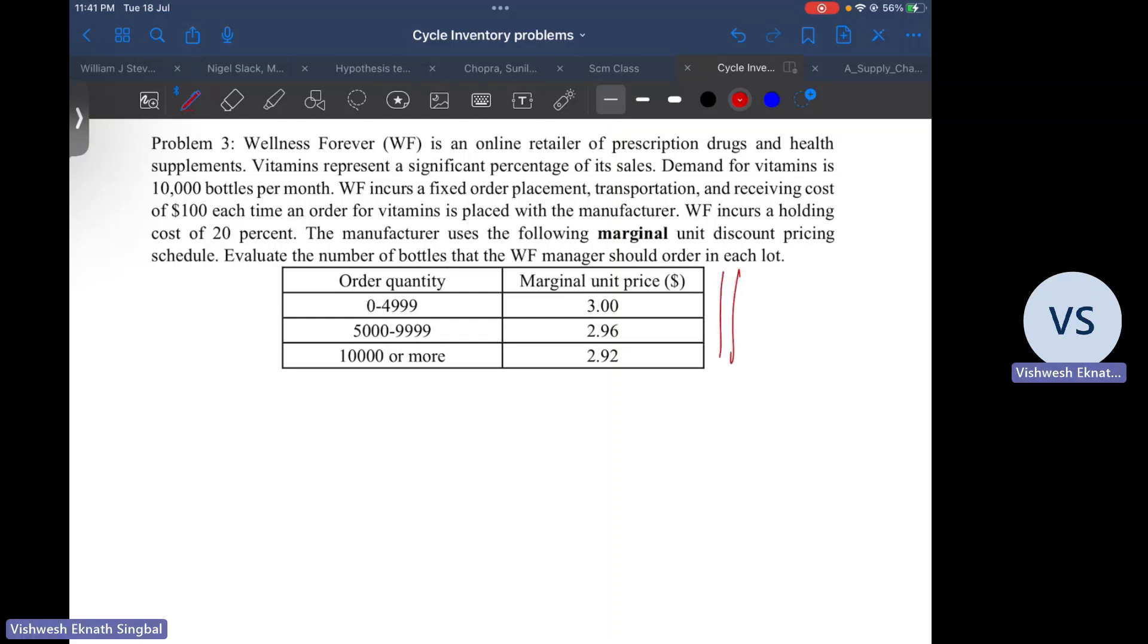We have to find out what should be the ideal or optimal lot size. Let's just understand what is happening over here. We have the unit price, but this is marginal right now. For the first one, the price is 3. Let this q0 equal to 0 up to q1. So this is q0, q1, q2. Next one is 2.96.